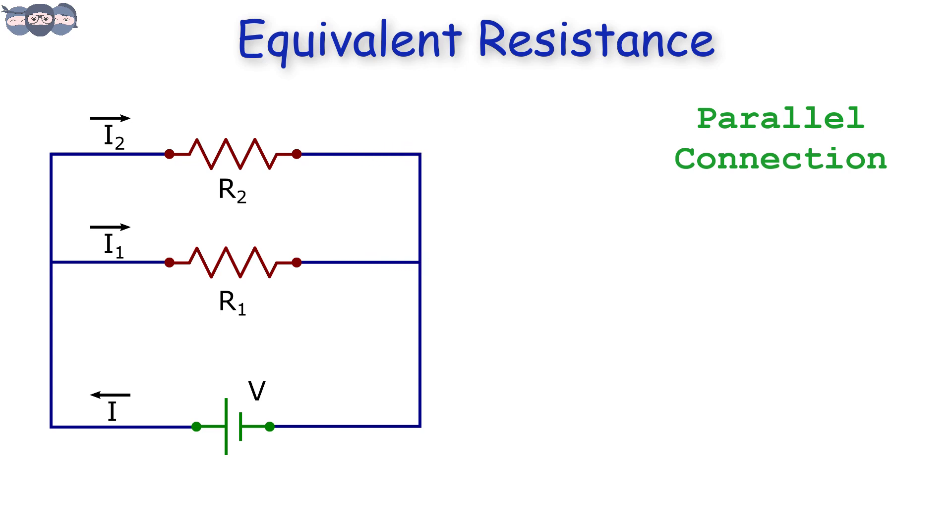Let the total current be I and I1, I2 be the currents through R1 and R2 respectively. The voltage across resistors is V.